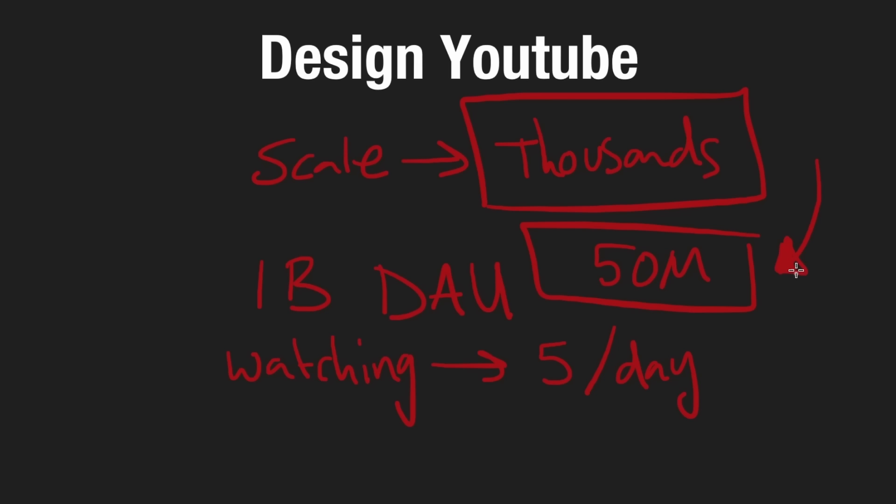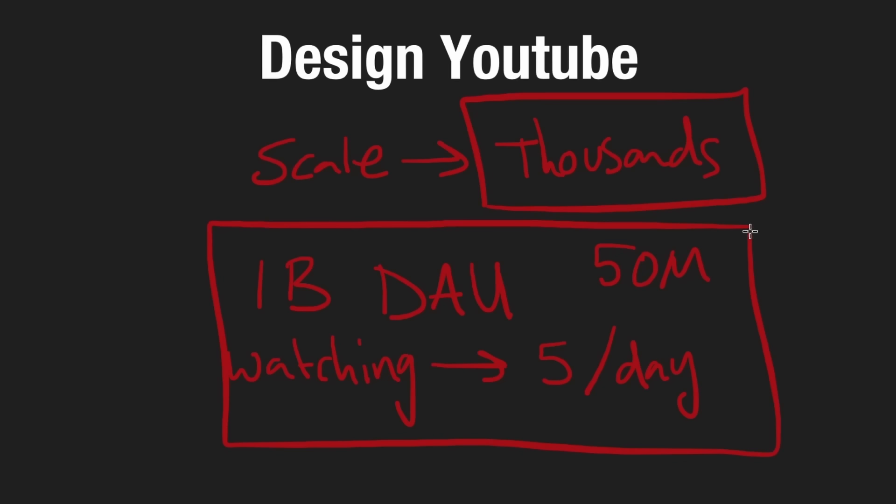The good thing is among these 50 million videos, most of them probably aren't going to be getting a ton of views. The top 5% of videos probably account for like 90% of the views. We can design this assuming most videos will not be getting views, though they still have to be stored and we can't let them get deleted. In most cases, doing a bunch of complex math isn't super important — it's about coming to the right conclusions, which we kind of are.